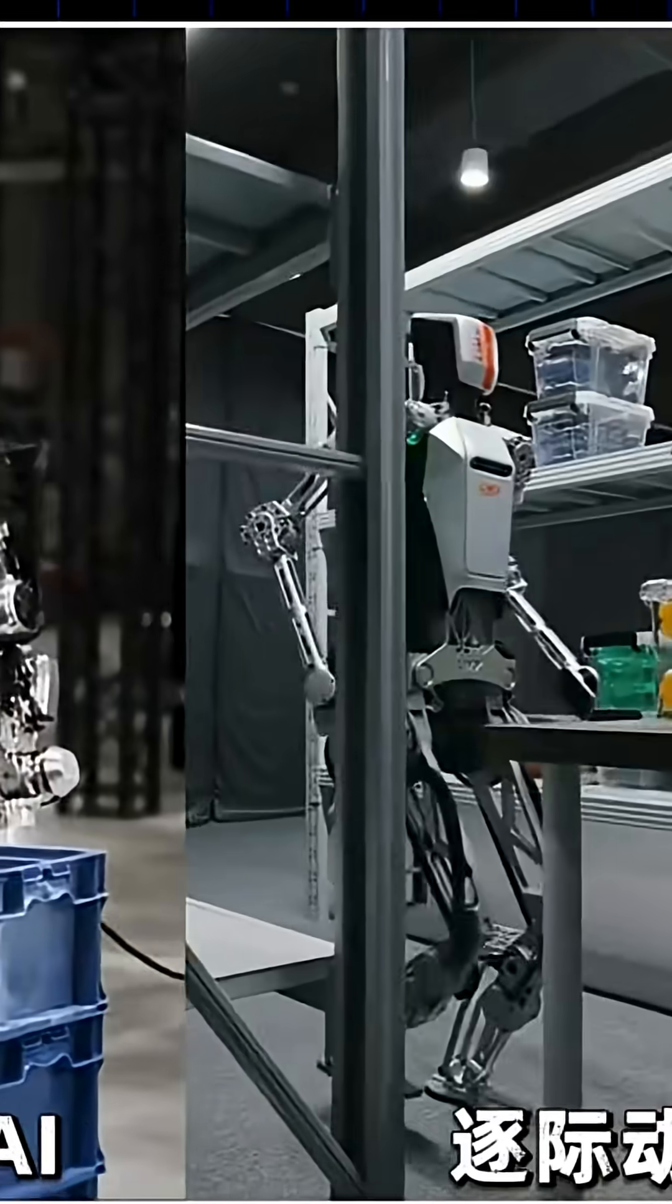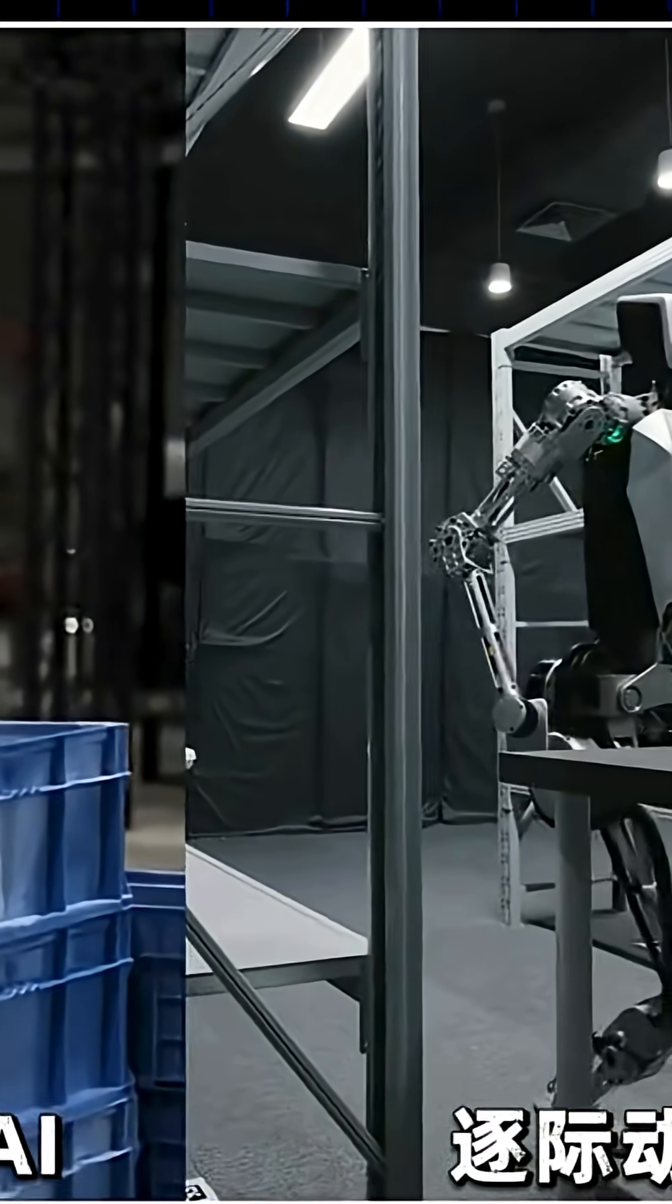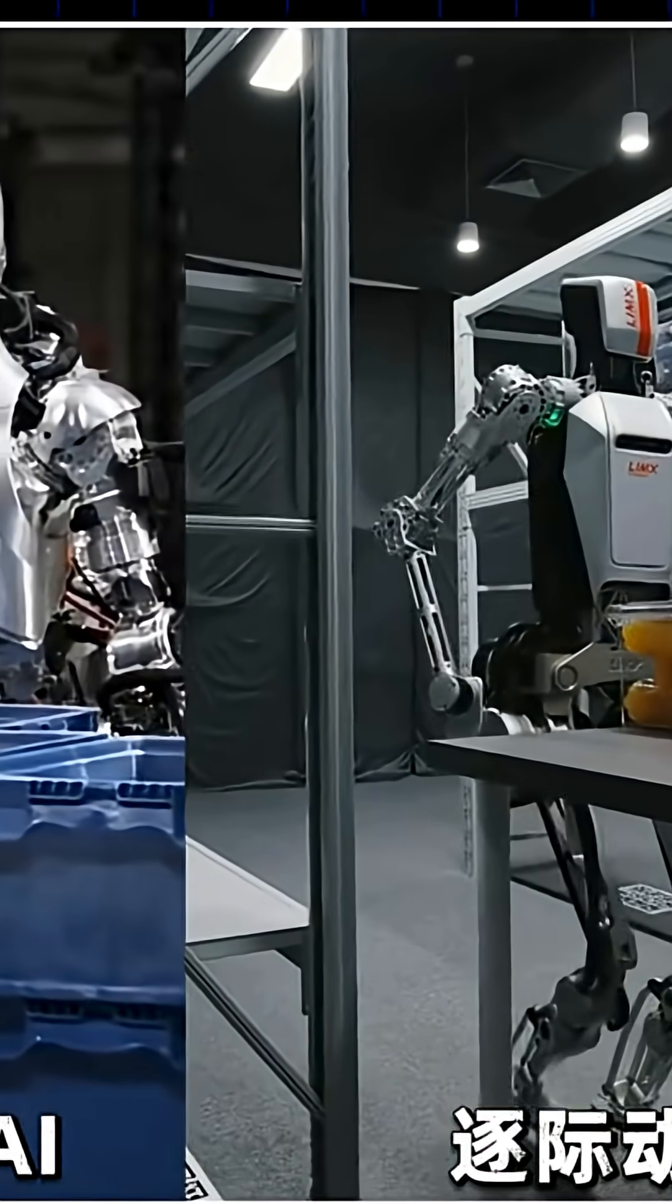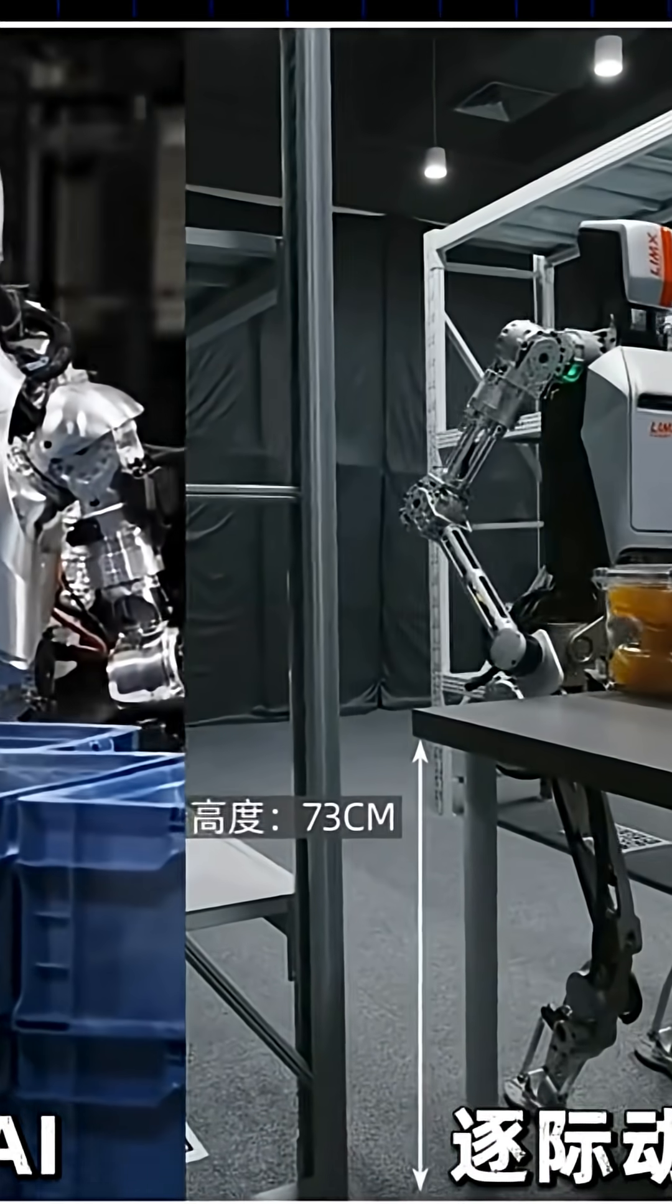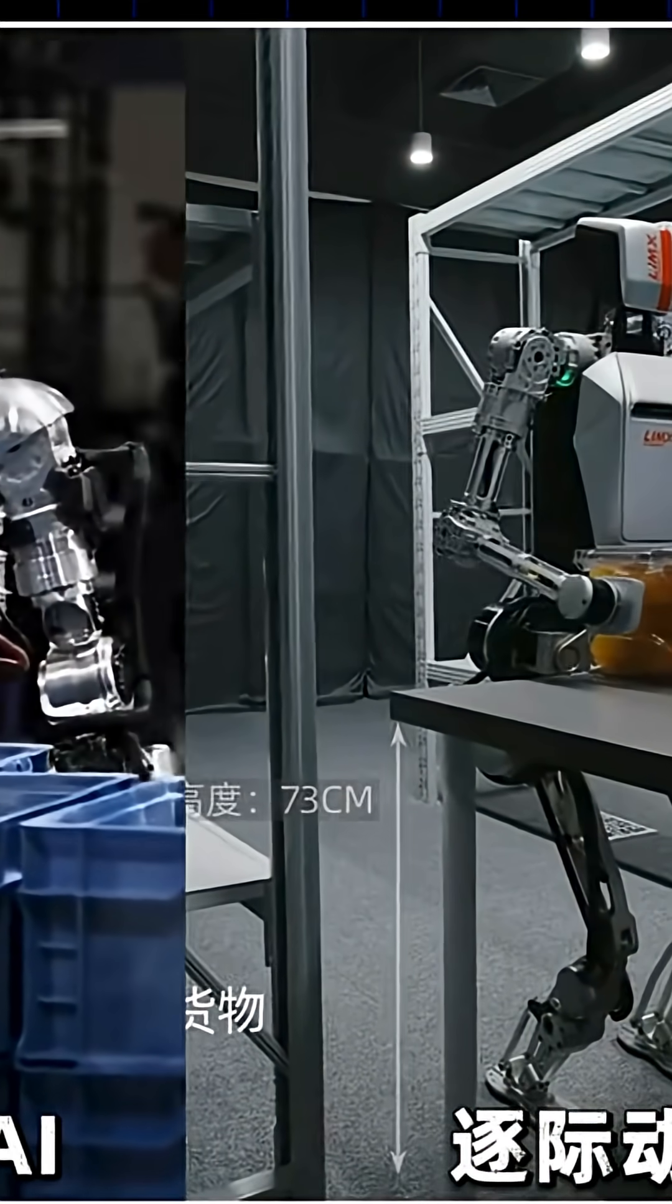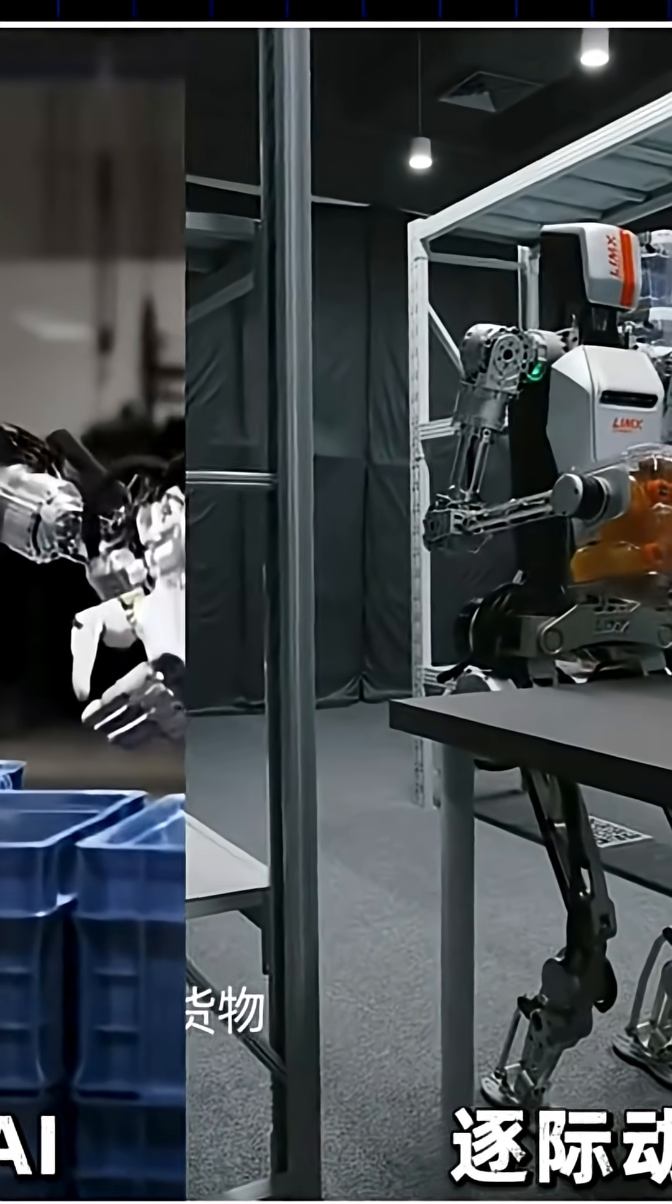This shows Zhuji Dynamics' humanoid robot using its over 360-degree hip joint rotation to stand steadily from prone in a Superman-like posture.